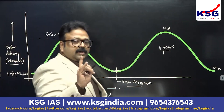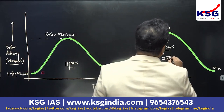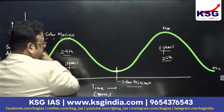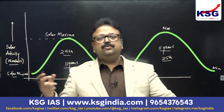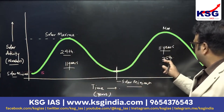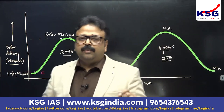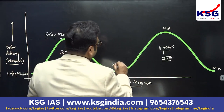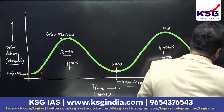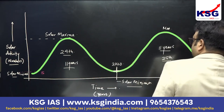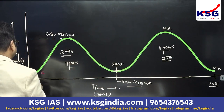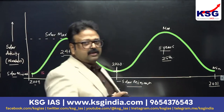Right now, the 25th sunspot cycle is going on — the 25th sunspot cycle. That means before that, the 24th was there. The 24th cycle started in 2009 and ended in 2020.